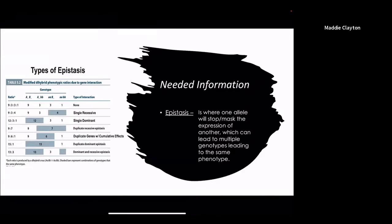If you look to your left that table shows you all the different kinds. The 9:3:3:1 is the ratio that we always expect when there is no form of epistasis present.